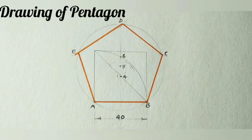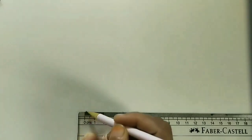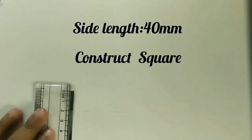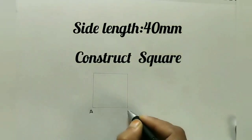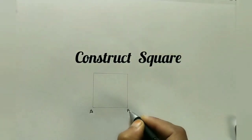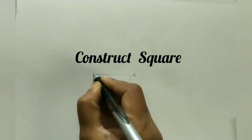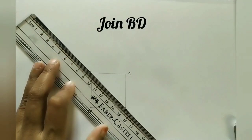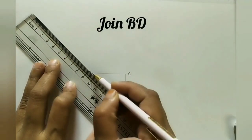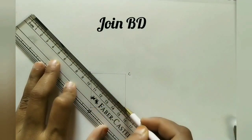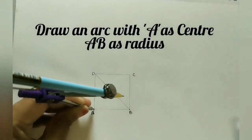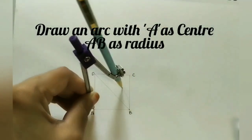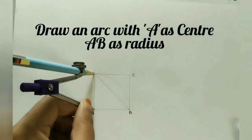Let us draw a pentagon by using the general method. The given side is 40 mm. We need to initially draw a square ABCD with side 40 mm. Join B and D.